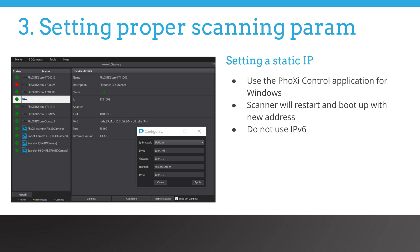After launching the FOXI control application, the discover window will pop up. Here, all the available scanners on the network are listed. Select the targeted scanner and click on the configure button. Please use IP version 4. Select the IP address and the network mask. Note that the network interface on the vision controller needs to be on the same sub-network.